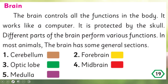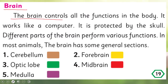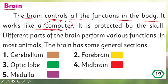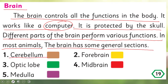Now let's talk about the brain. The brain controls all the functions in the body. It works like a computer and is protected by the skull. Different parts of the brain perform various functions. In most animals, the brain has some general sections.